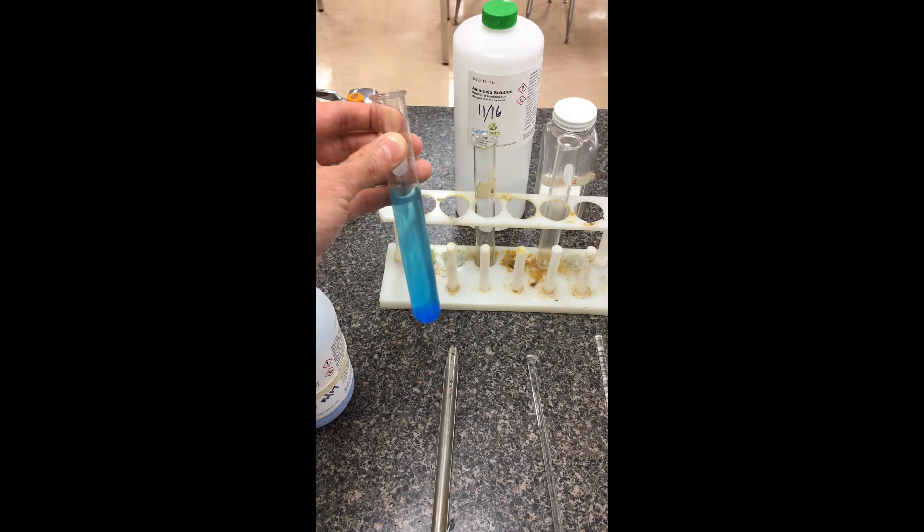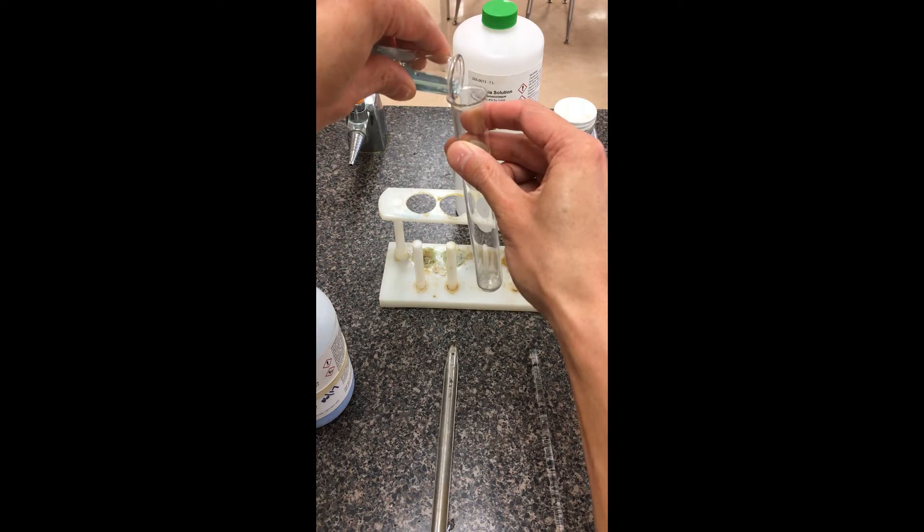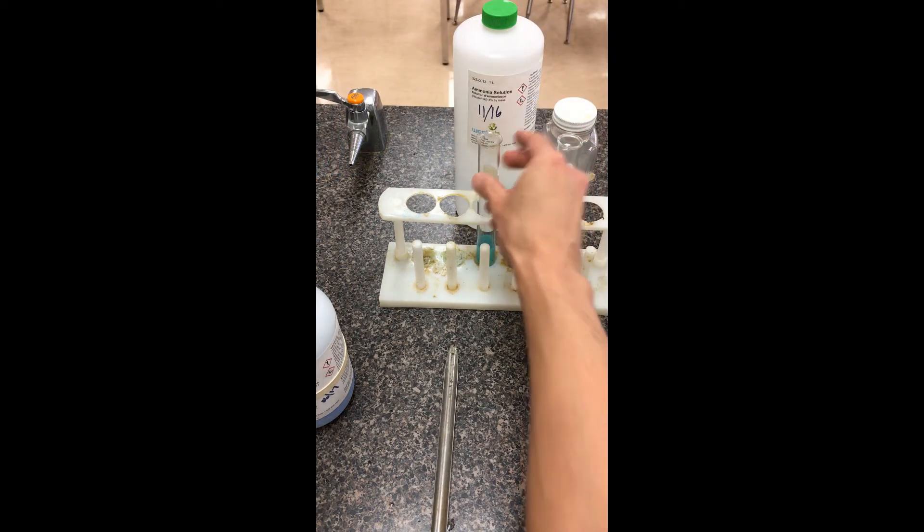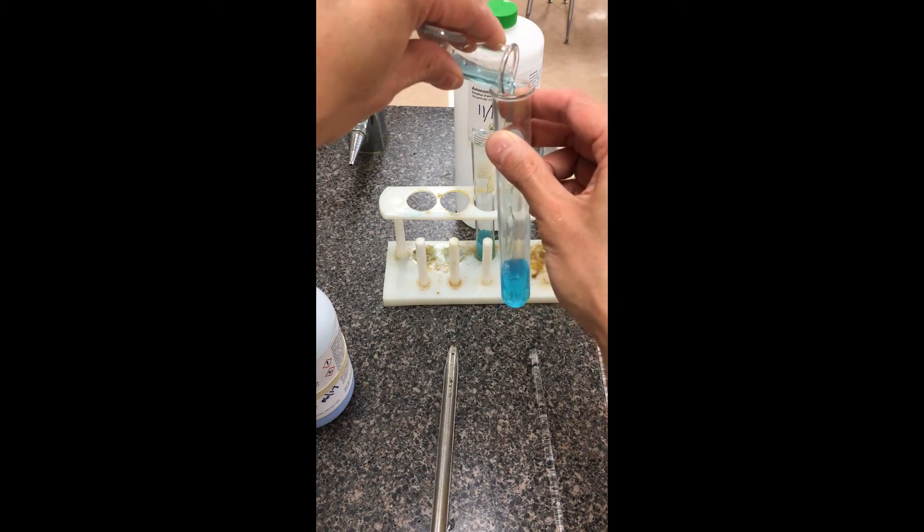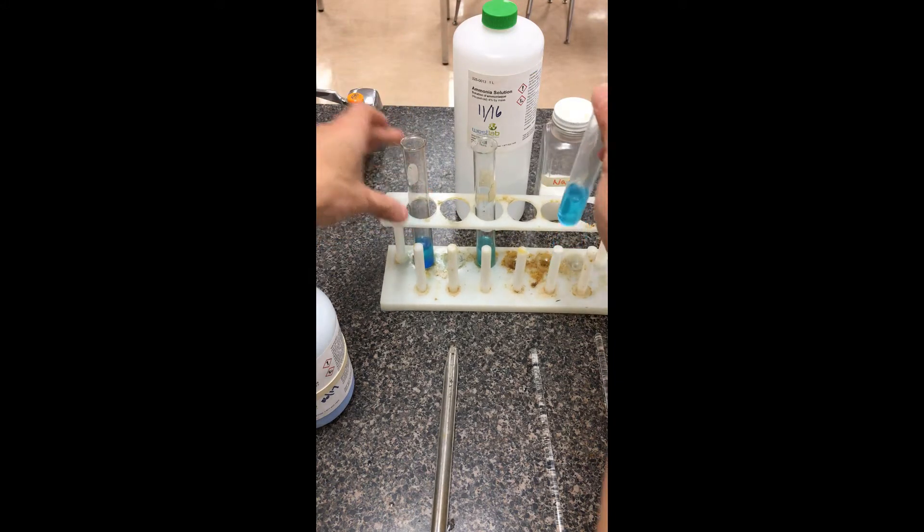So there we have our copper sulfate solution here. I'm going to transfer a little bit of this here into the middle container. So this one here, I'm going to add ammonia to that. For the other one here, I'm going to add just solid chunks of sodium chloride. Again, I'm just keeping a little bit of the blue solution so you can have a control to sort of compare it to.